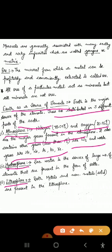Next is hydrosphere — hydro means water. It represents the liquid phase of the earth in the form of seas, lakes, and rivers. Hydrosphere covers almost 80% of the surface of the earth. Seawater is the major and largest source of a number of elements, and they are present in the form of salts. Lithosphere represents the solid phase of the earth.